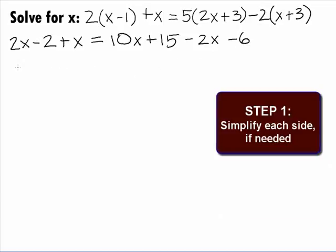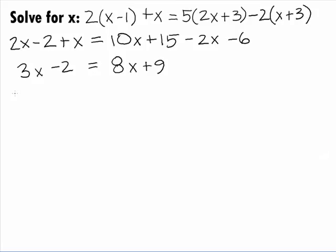We can combine some like terms here to simplify it even further. On the left side, after combining the 2x and the x, we get 3x minus 2. After combining the 10x minus 2x, we get 8x and 15 minus 6 gives us plus 9 on the right side.